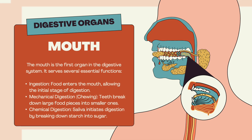The mouth is the first organ in the digestive system. It serves several essential functions. First is ingestion, where food enters the mouth, allowing the initial stage of digestion. Second is mechanical digestion or chewing, when teeth break down large food pieces into smaller ones. Third is chemical digestion, which happens when saliva initiates digestion by breaking down starch into sugar.